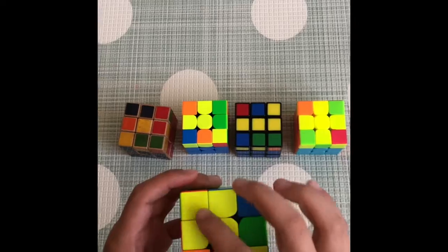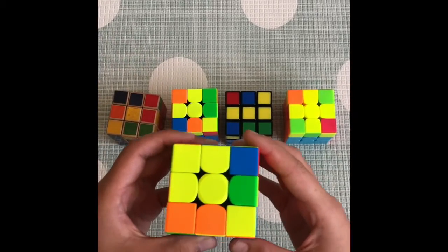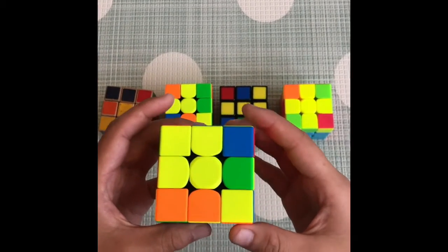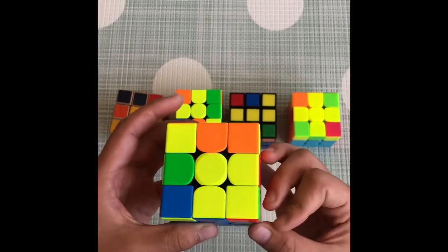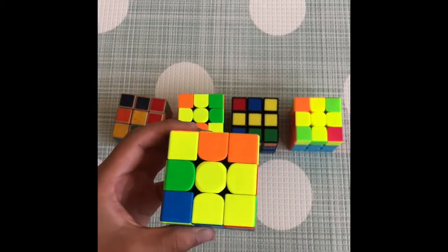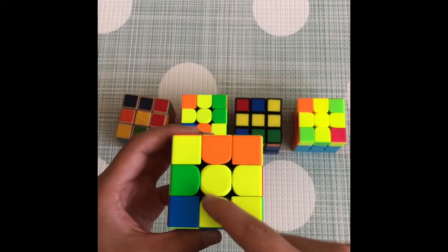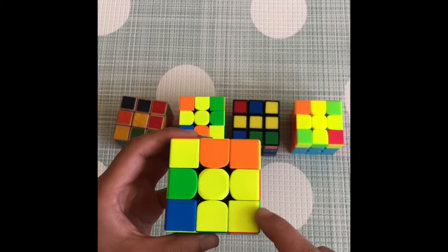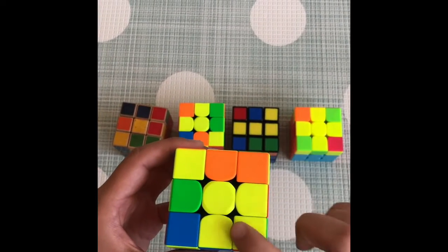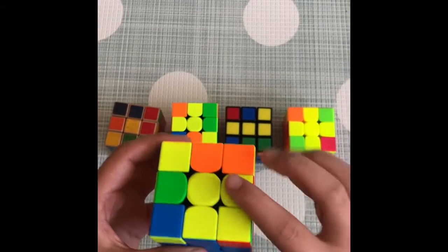So it should look like this. Don't mind the corners right now. So if you have the L, then do this algorithm: F2, R inverted, U inverted, R, U, F2 inverted.